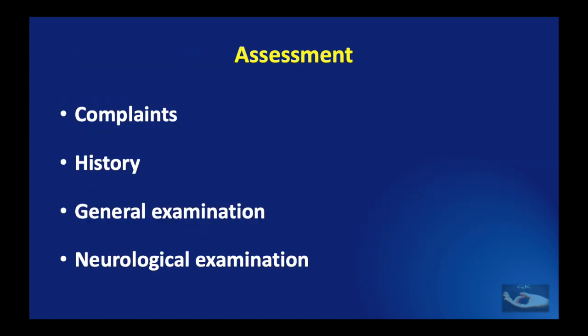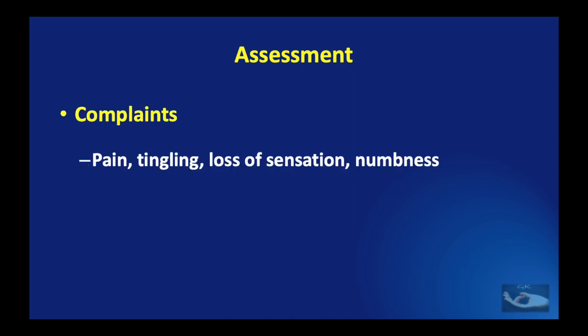When we decide to do a clinical assessment of a peripheral nerve problem, we have four headings under which we do the assessment: the analysis of complaints, the history, the general examination, and the neurological examination. The commonest complaints in a peripheral nerve disorder, apart from weakness of the muscles, are pain, tingling, loss of sensation, and numbness.